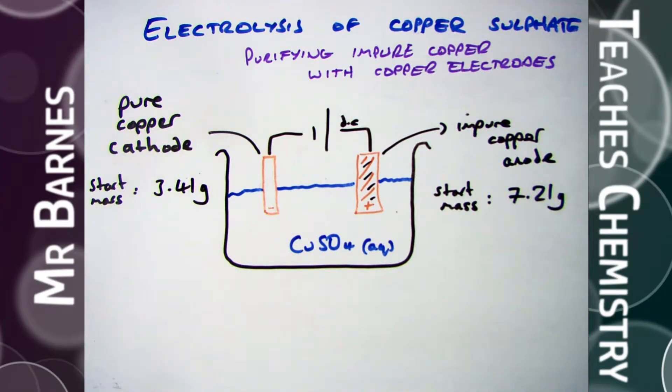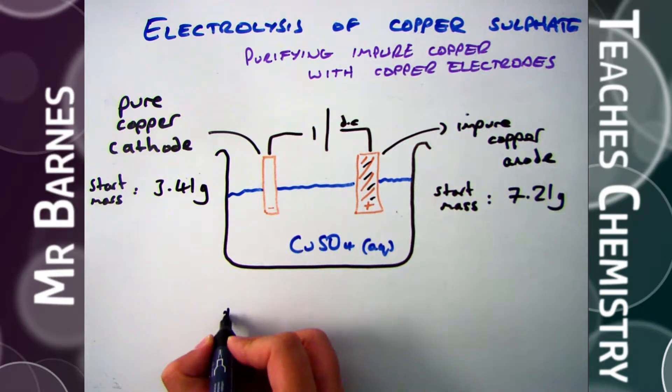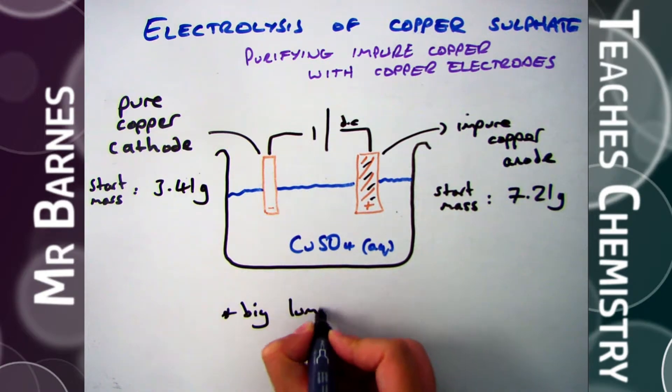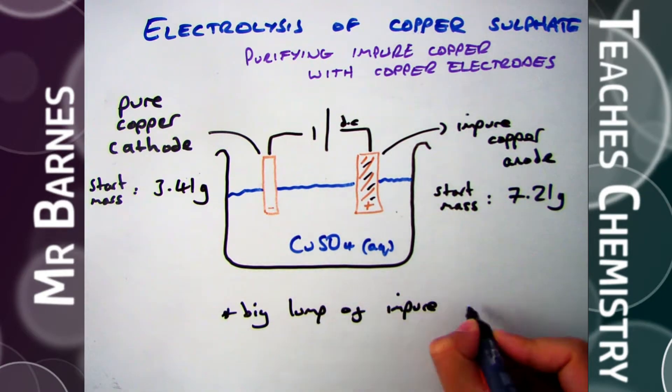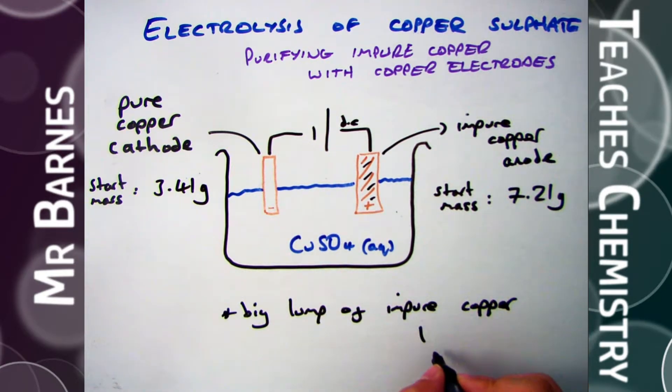If we break this down then, so if we start off with a pure copper cathode, let's say I had a mass of 3.41 and an impure copper anode with a mass of 7.21, I can then use this apparatus as you can see here to purify it. Now what will happen is the impure copper anode which is full of lots of impurities, things that aren't copper, will start to break down.